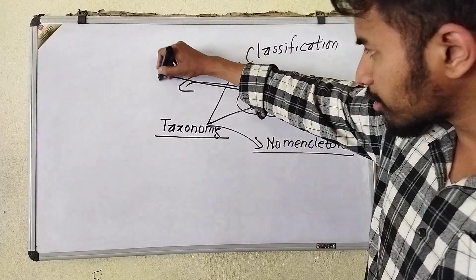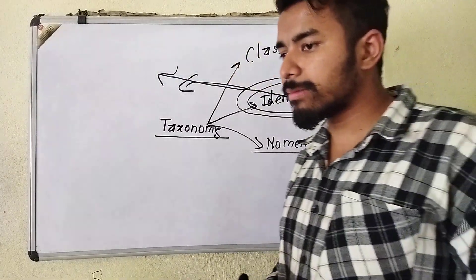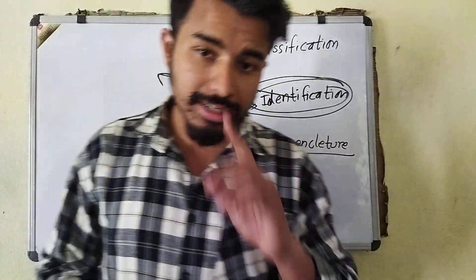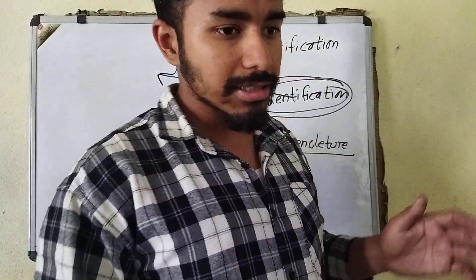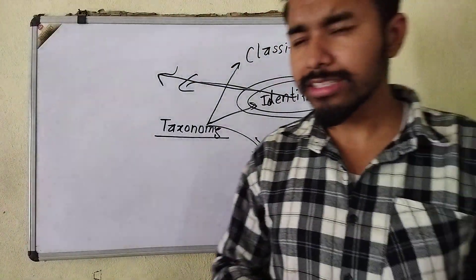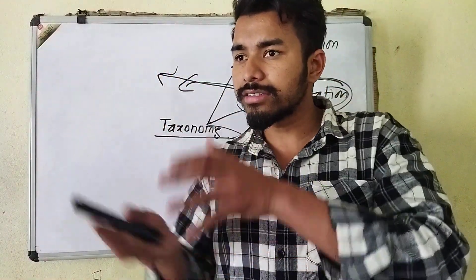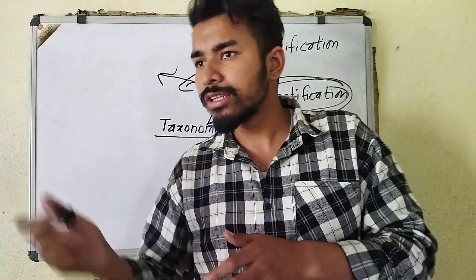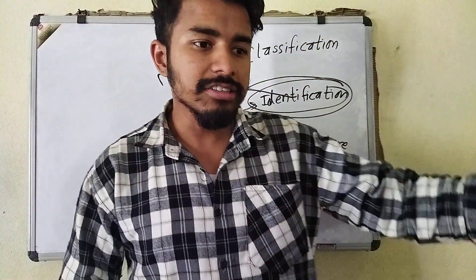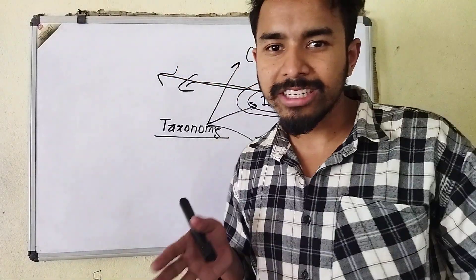Now we have to identify, and after that we have the next science, which is classification. Classification is the process of defining different classes, or different groups, or different divisions for living beings after the identification process.